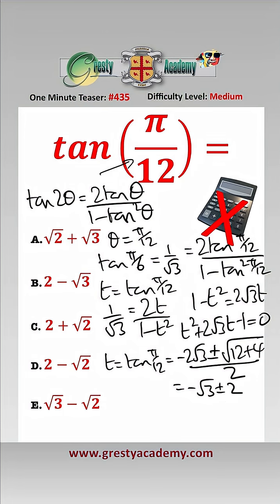Now we know that π over 12 is in the first quadrant, so it must be positive, and therefore we know that tan of π over 12 is equal to minus root 3 add 2, or 2 minus root 3, same thing, which is answer B.